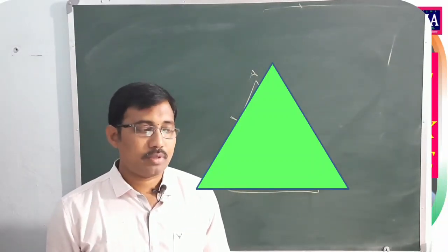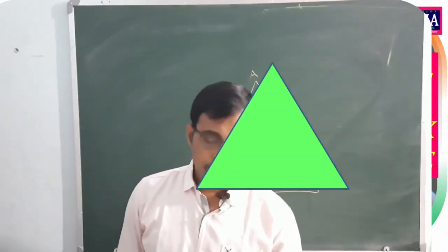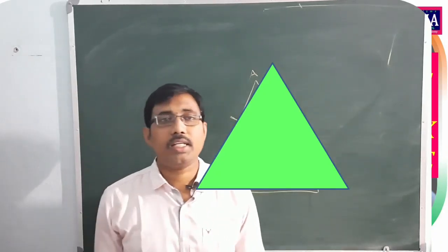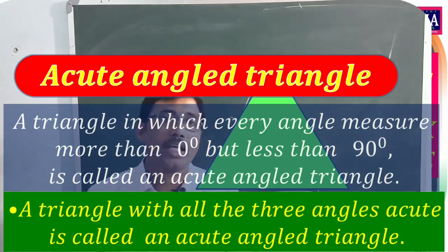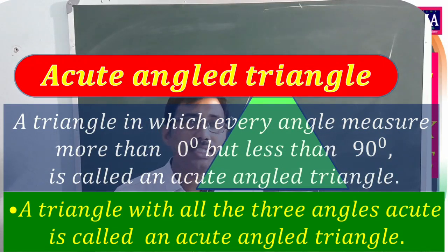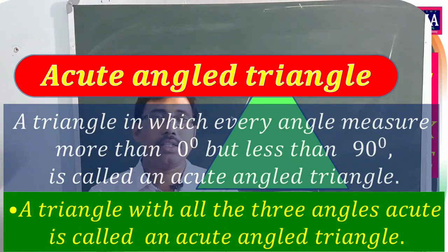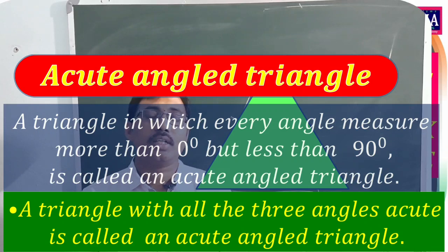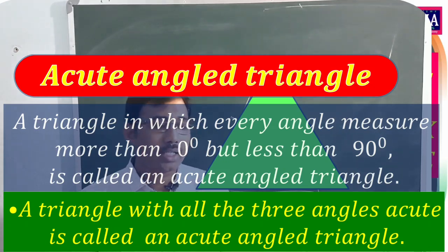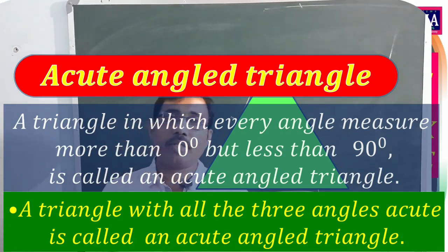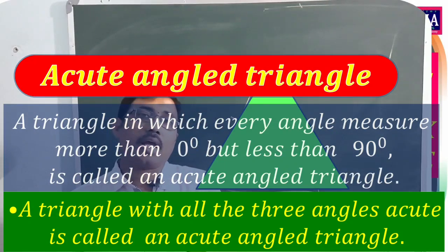According to angles, there are three types. The first is the acute angle triangle. In any triangle where all three interior angles measure more than 0 degrees and less than 90 degrees, the triangle is called an acute angle triangle. Each angle measure is between 0° and 90°.